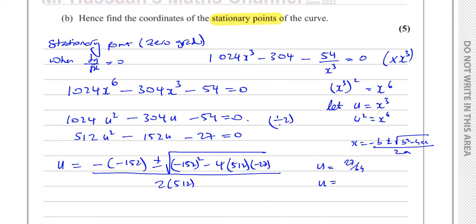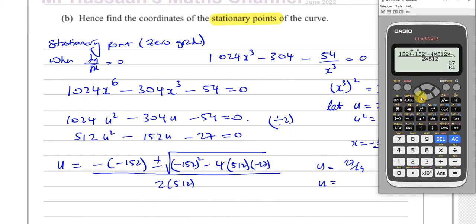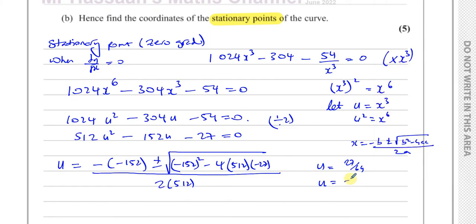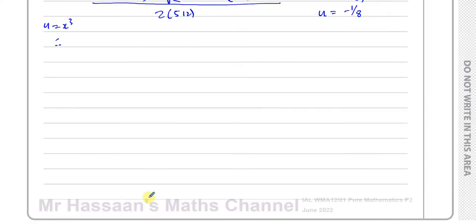Evaluating this gives two values: taking the plus gives u equals 27 over 64, and taking the minus gives u equals negative 1 over 8. Since u equals x cubed, we have x cubed equals 27 over 64 and x cubed equals negative 1 over 8.